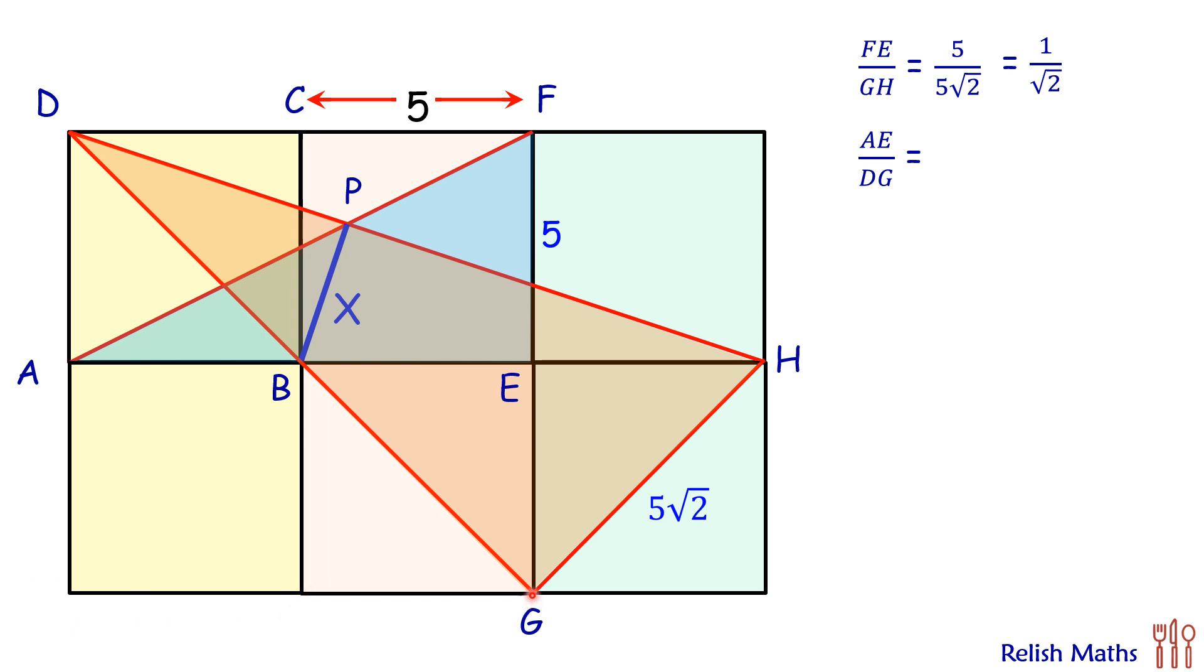So DG is the hypotenuse, which will be 10√2. So the ratio will become 10 upon 10√2, or 1 by √2.